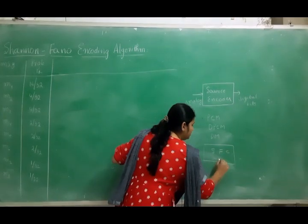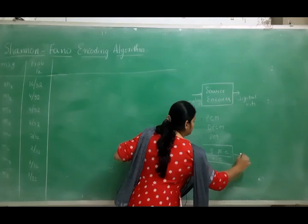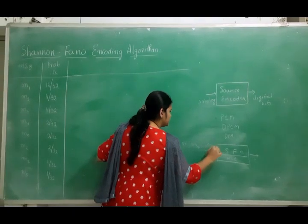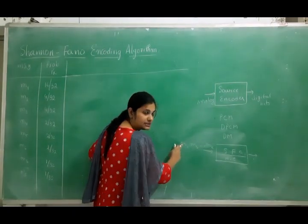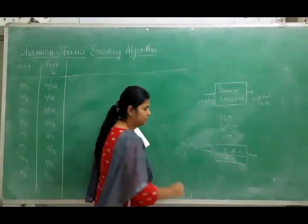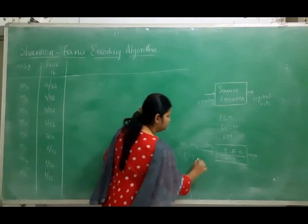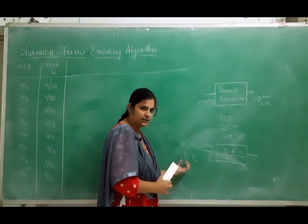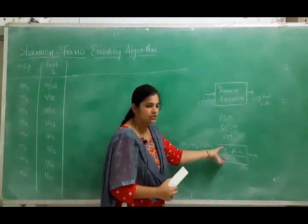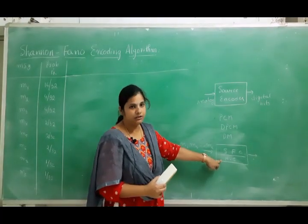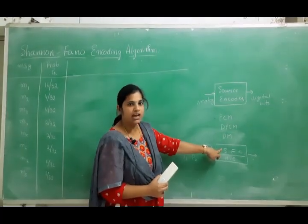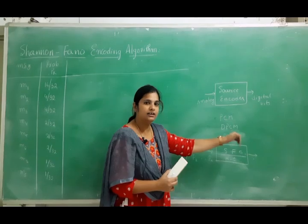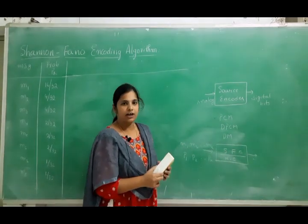As well as Huffman coding methods, in order to convert the messages into digital bits. Let us say we have some messages m1, m2, up to mk, with equivalent probabilities p1, p2, and so on. When we want to code these messages into digital bits, we use the Shannon-Fano encoding method as well as Huffman encoding method.